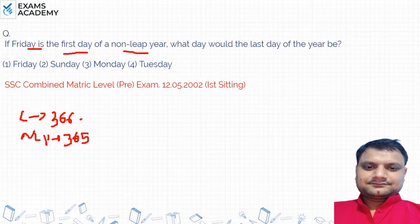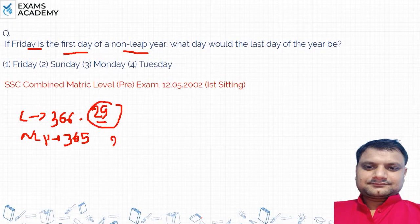The key difference is the 29th day. If it is a leap year, February will have 29 days, and if it is a non-leap year, February will have 28 days.